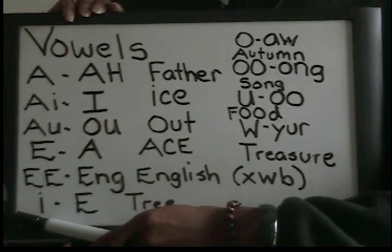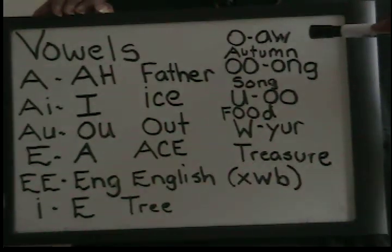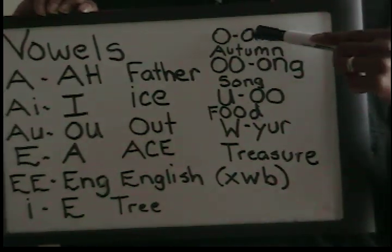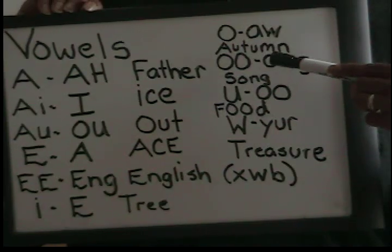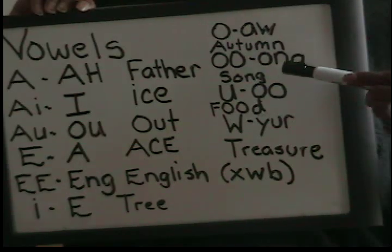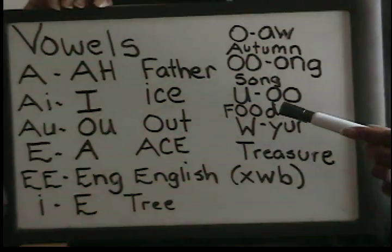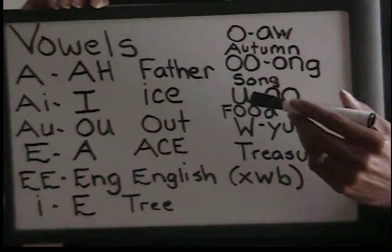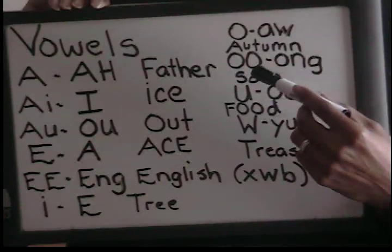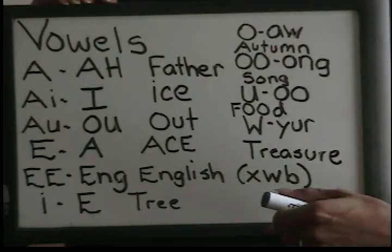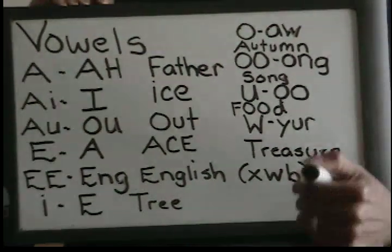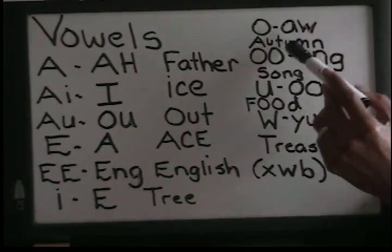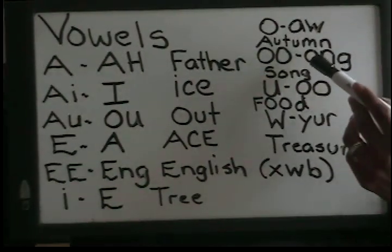Moving up, the O in Hmong RPA sounds like the A in 'autumn.' Double O — OO — sounds like 'oom,' as in a song. In Hmong they have the word 'nyob' — N-Y-OO-B — where that double O gives you the OO sound in 'nyob.' So double O will be that OOM sound.